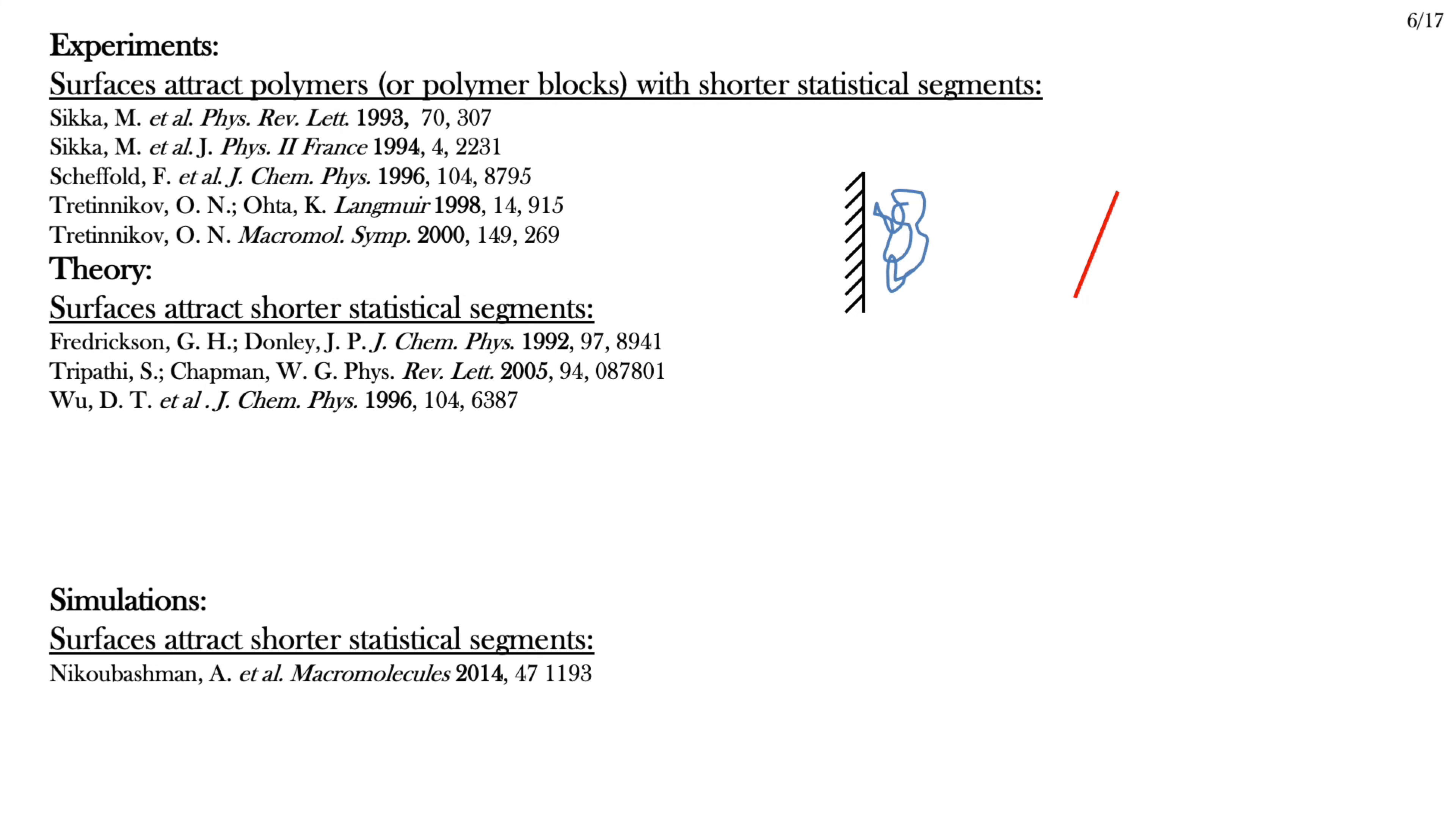This is not a new problem. Experiment, simulation and theory have all been done. These experiments see shorter statistical segments going to the wall in both polymer blends and copolymers. These theory papers find the same, and so does this paper using MD simulations. But if this was the end of the story, I wouldn't be talking about it. I want to particularly point out this paper by Wu-Waddell, who calculated a profile for the excess flexible polymer at the wall. I'll be returning to this shortly.